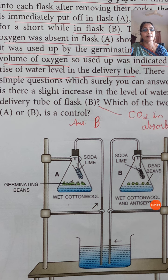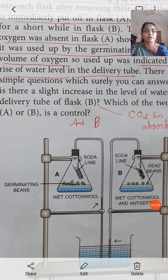In flask B, we can see a small rise in the water level in the delivery tube. This is because the soda lime absorbs the carbon dioxide present in the flask. That is why a small rise in the water level in flask B can be seen.